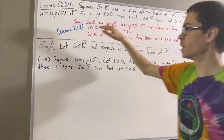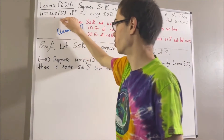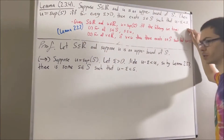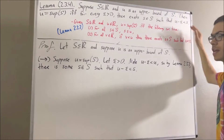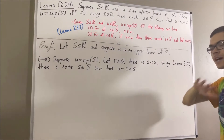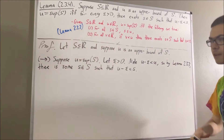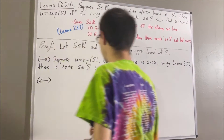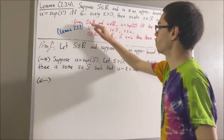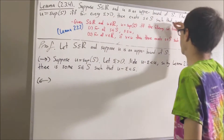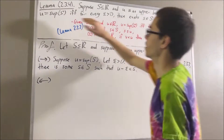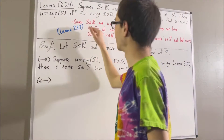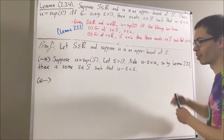So we have proven the forward direction: if u is the supremum of S, then the epsilon condition holds. That completes the proof of the forward direction. Now let's prove the converse — if the epsilon condition holds, then u is the supremum of S. So let's suppose that the epsilon condition is true.